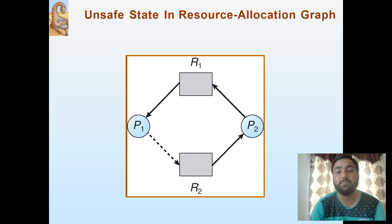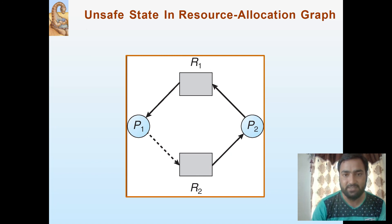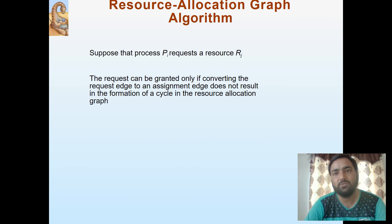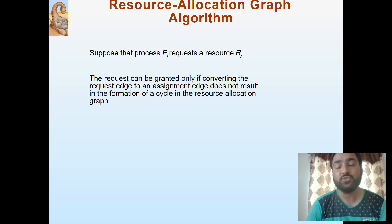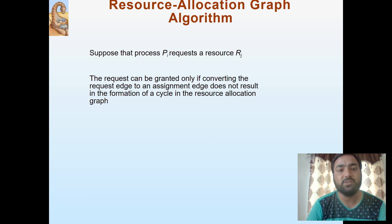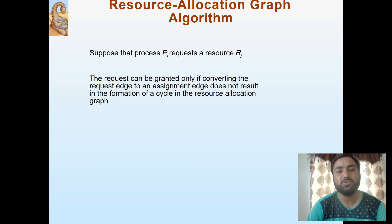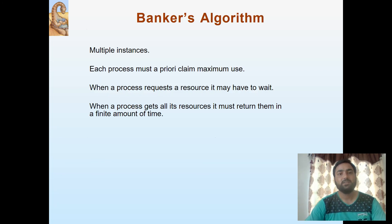What does the resource allocation graph algorithm say? Suppose that process P1 requests resource R2. The request can be granted only if converting the request edge to an assignment edge does not result in the formation of a cycle in the resource allocation graph. If a cycle is found, it will not allocate; if no cycle is found, the resource will be allocated to the process. Then comes the Banker's algorithm, which we will be discussing in the next video. Thank you.